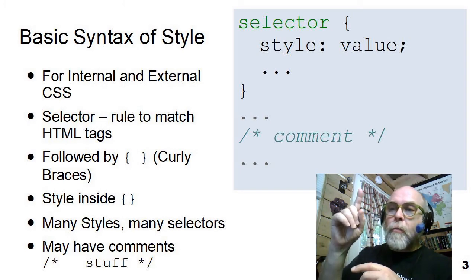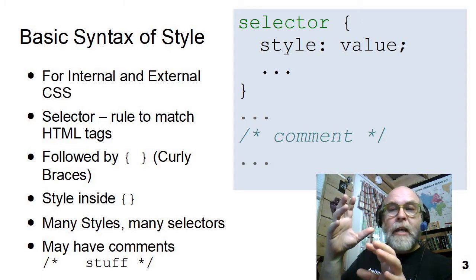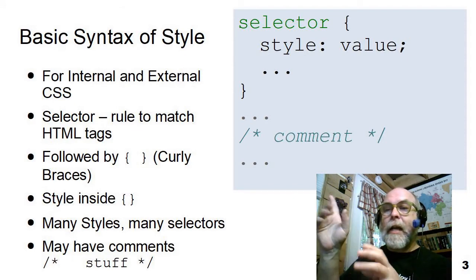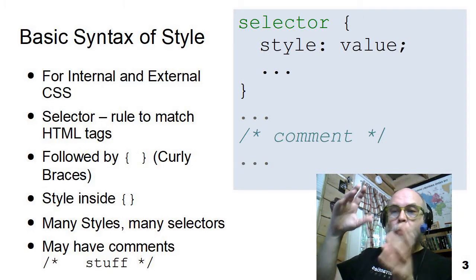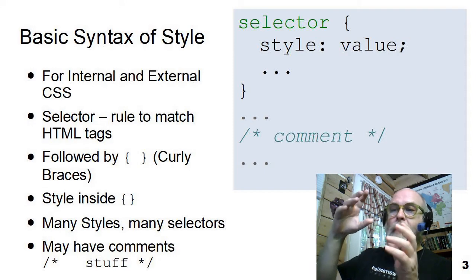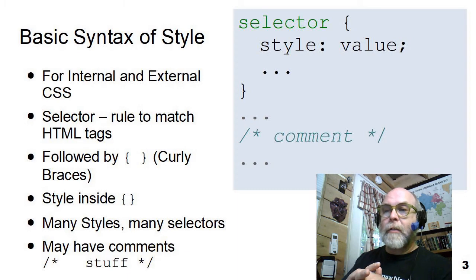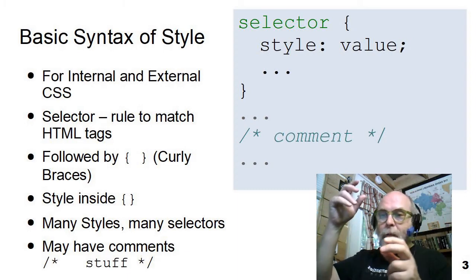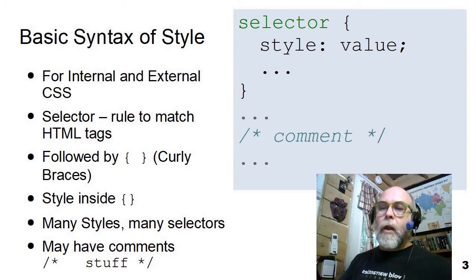The open curly brace that follows the selector begins the style associated with the selector, and the closed curly brace ends the style. You could put 1, 2, 10, or 20 styles — setting colors, fonts, margins, and all of that kind of stuff inside the curly braces. They can all be on one line, or on separate lines, indented to make it look good. I like them indented and spaced out so I can see what's going on.